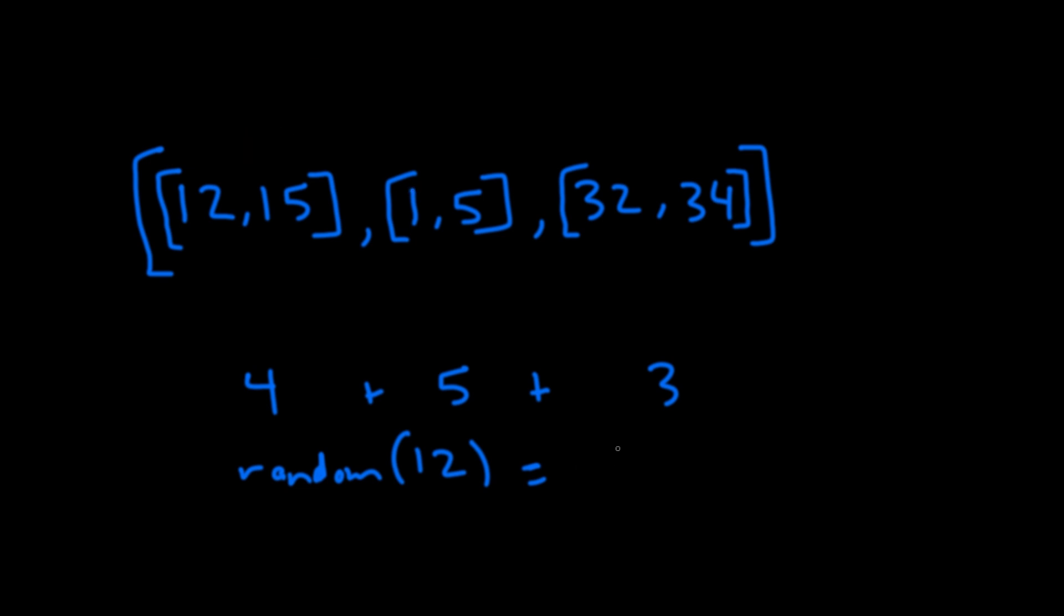Let's take another example. Say the random number that gets returned is 11. We look at the first range - would 11 fall in this range? No, because we have 4 numbers, so we do 11 minus 4 which gives us 7. We look at the second range - are there 7 numbers here? No, there are 5. So we do 7 minus 5, now we have 2. We're on the third range - are there 2 numbers within this range? Yes. We return the second number, which is 33.